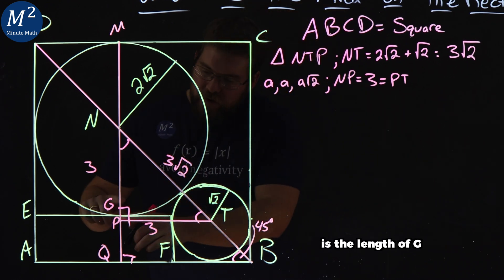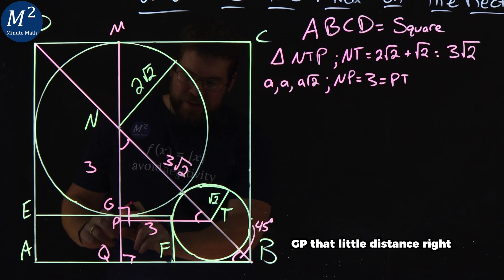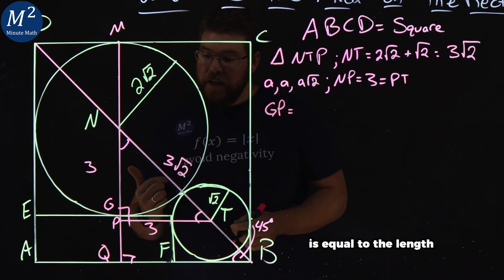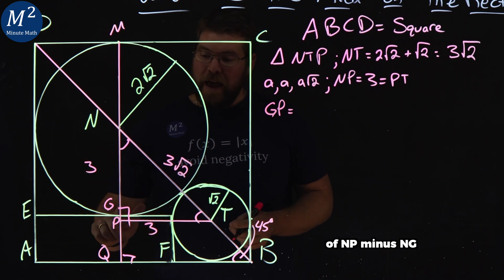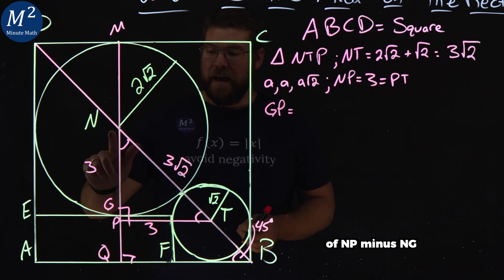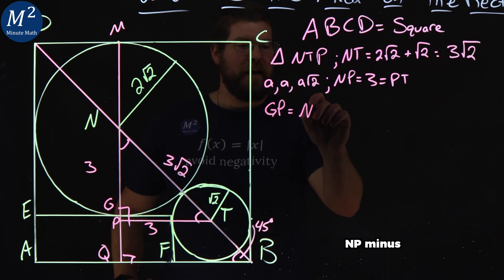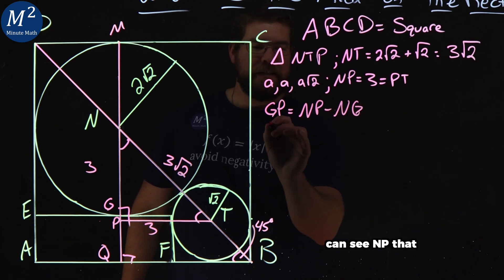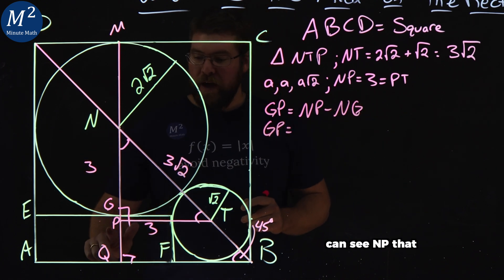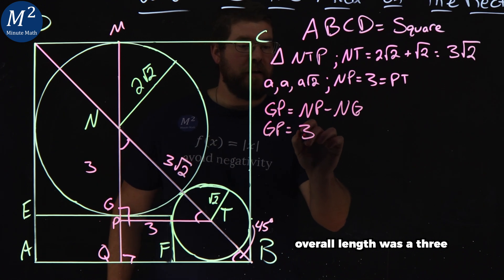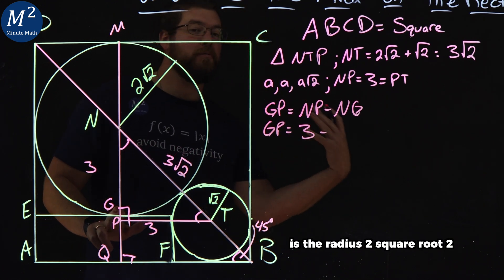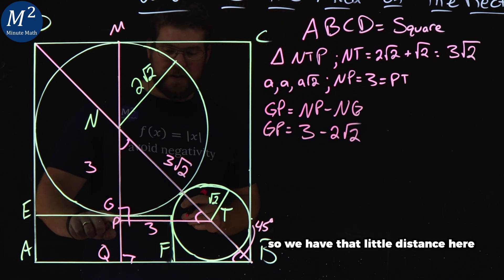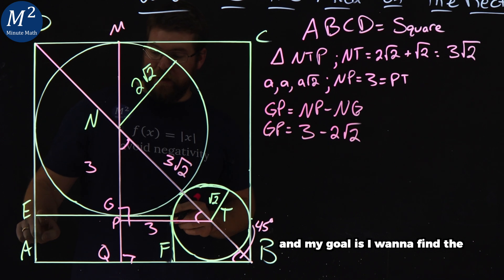Now, what is the length of GP? GP, that little distance right there. Well, GP, that length is equal to the length of NP minus NG. NP minus NG, which, well, we can see. NP, that overall length we said was 3, minus the length of NG, which is the radius 2√2.